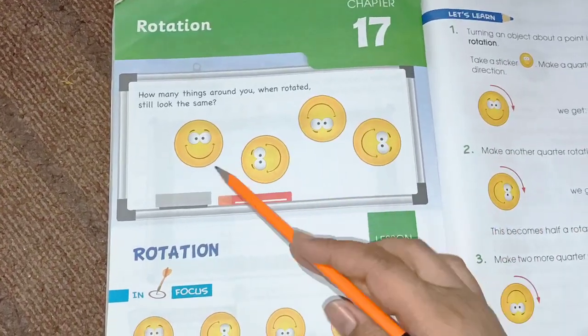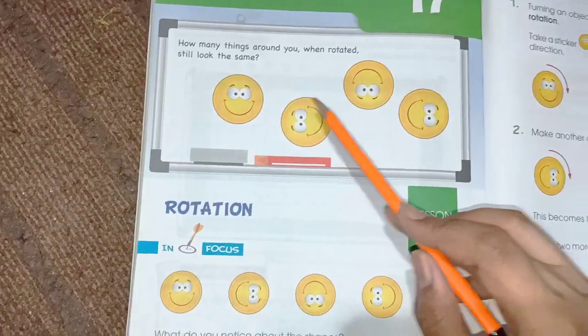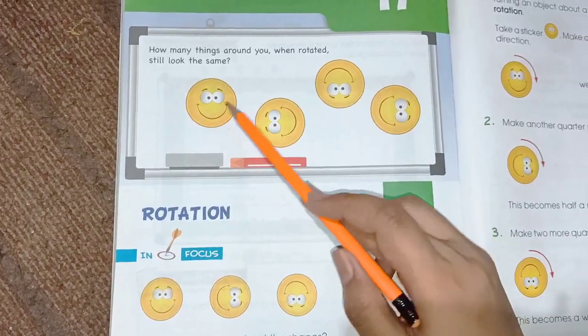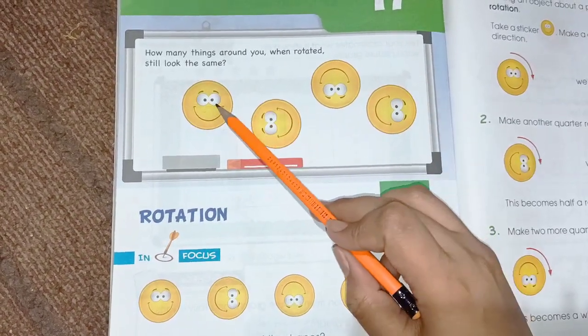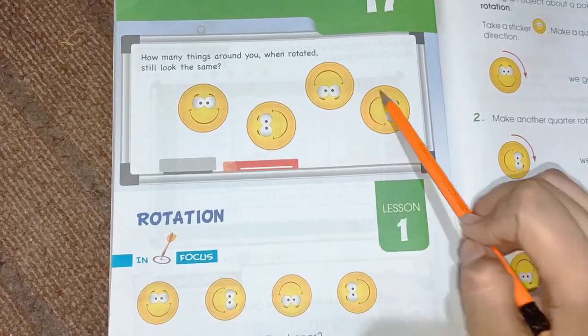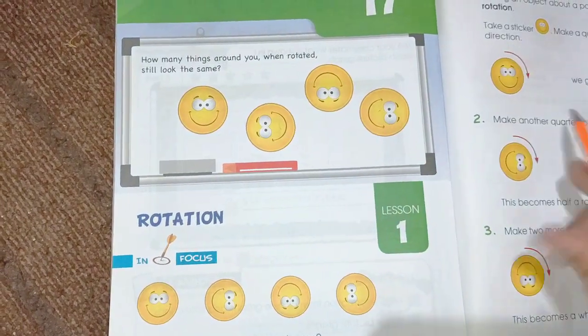As you can see in the shapes, in the smiley faces, rotation is when we rotate anything. As you can see, the face is rotating from left to right to up and down, all the sides.